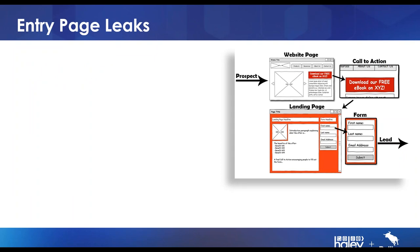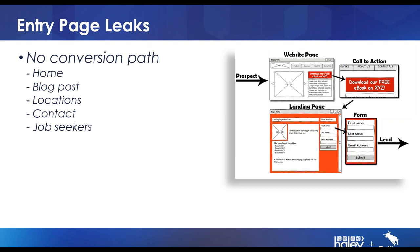Entry pages: the biggest mistake is there's no conversion path. The idea is a prospect comes to a website page, somewhere on that page there's a call to action, that leads to a landing page where there's some ability to take action — a response vehicle. You have to look at all your entry pages: your home page, top of your blog, individual blog posts, location pages, specialties pages, your contact page, your job seekers page. When someone does a Google search it doesn't just show your homepage — it can show any number of different pages.